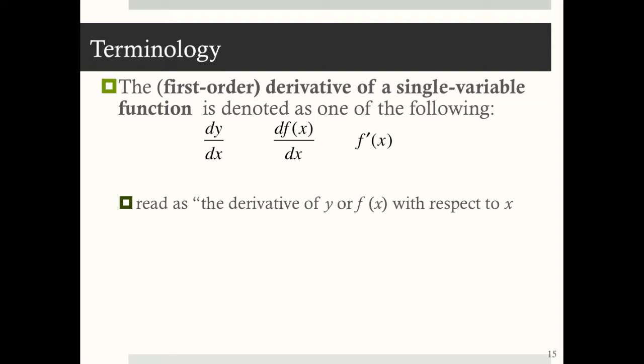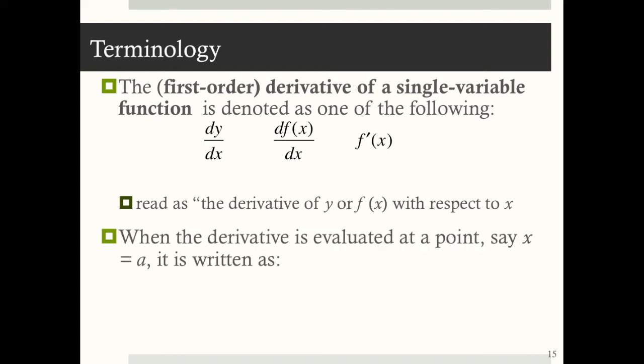So notice we're talking about rates of change or slopes, but instead of using that triangle delta to denote change in, we're just using the letter d. And when the derivative is evaluated at a point, say x equals a, it's written as either dy/dx with a vertical line where the bottom says x equals a, or df(x)/dx with a vertical line at x equals a, or very simply f prime of a.